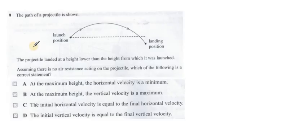Question number 9. The path of the projectile is shown. Launch position and the landing position. From the diagram, it is clear that the landing position is lower than the launch position. The projectile landed at a height lower than the height from which it was launched. Assuming that there is no air resistance on the projectile, which of the following is a correct statement? In this case, the important thing is we have no air resistance. So we can neglect the air resistance.